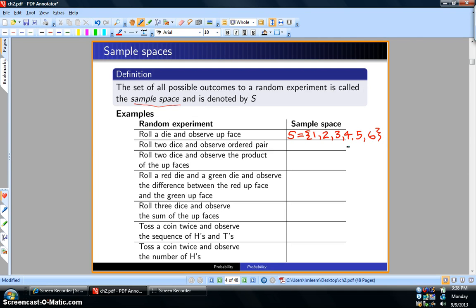Second one: roll two dice and observe the ordered pair. Since it's an ordered pair, we're talking about distinct dice. We'll start with one-one, known as snake eyes. One-two is different from two-one, so there are a total of 36 possibilities, the last one being six-six, often called boxcars.